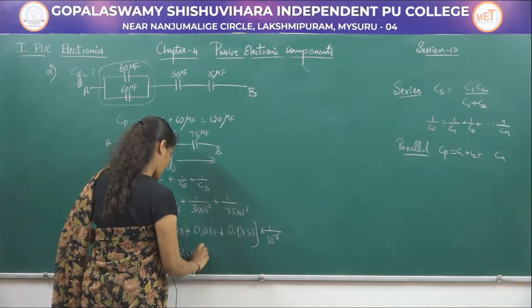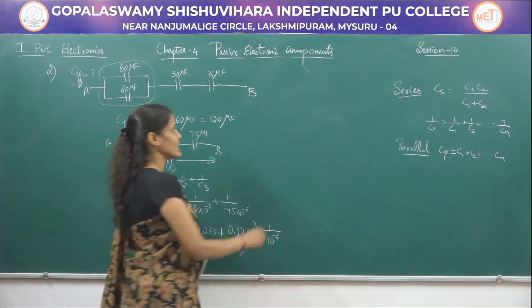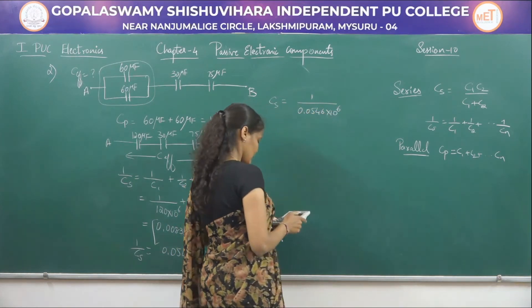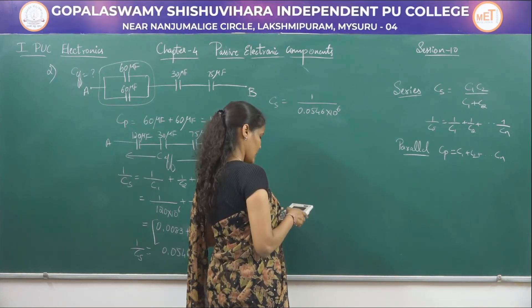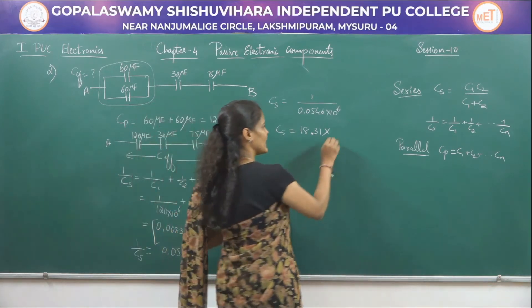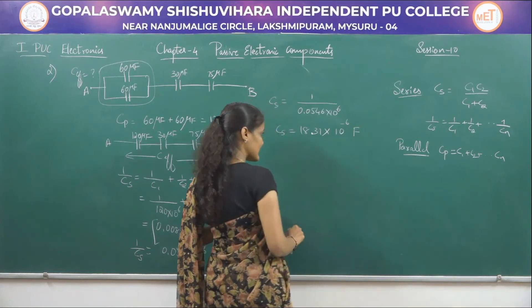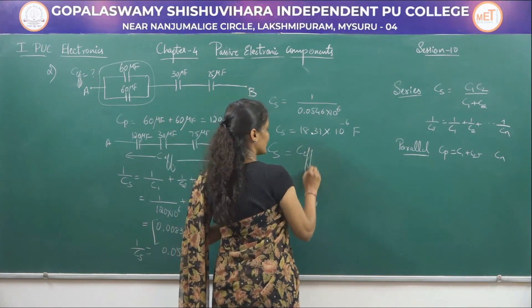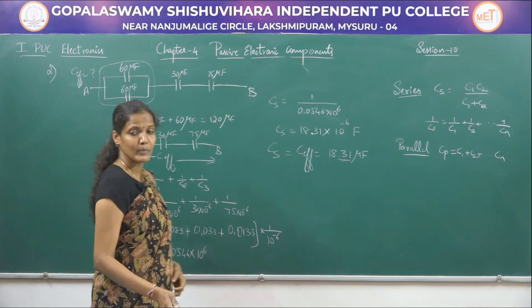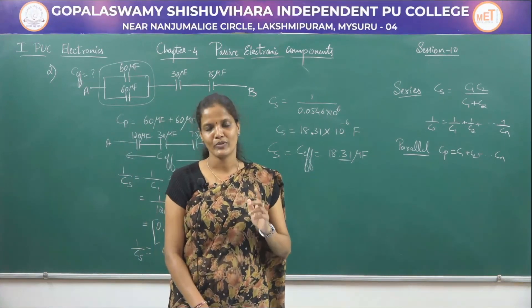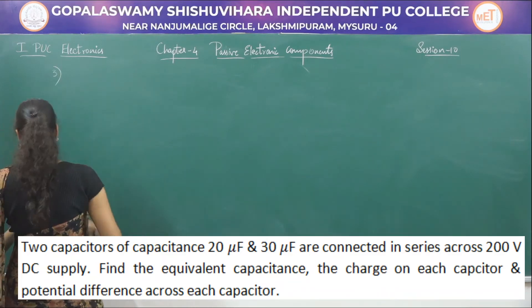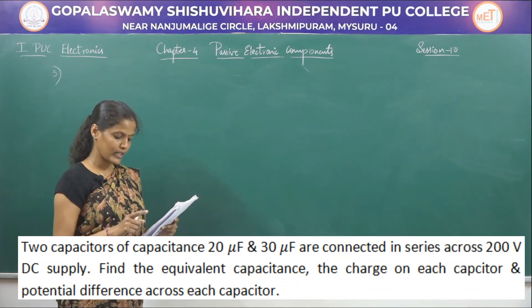That is the final capacitance value for the second problem. Now the third problem: two capacitors of 20 microfarad and 30 microfarad are connected in series across a 200 V DC supply. We need to find: (a) the equivalent capacitance, (b) the charge on each capacitor, and (c) the potential difference across each capacitor.